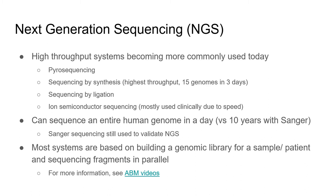NGS methods can largely be classified into four groups: pyrosequencing, sequencing by synthesis, sequencing by ligation, and ion semiconductor sequencing. I will not be discussing the technical aspects of each group here — I have included a link to an introductory video by Applied Biologic Materials that covers these NGS groups as well as Sanger sequencing. Feel free to click the link in the video or find it in the description below.